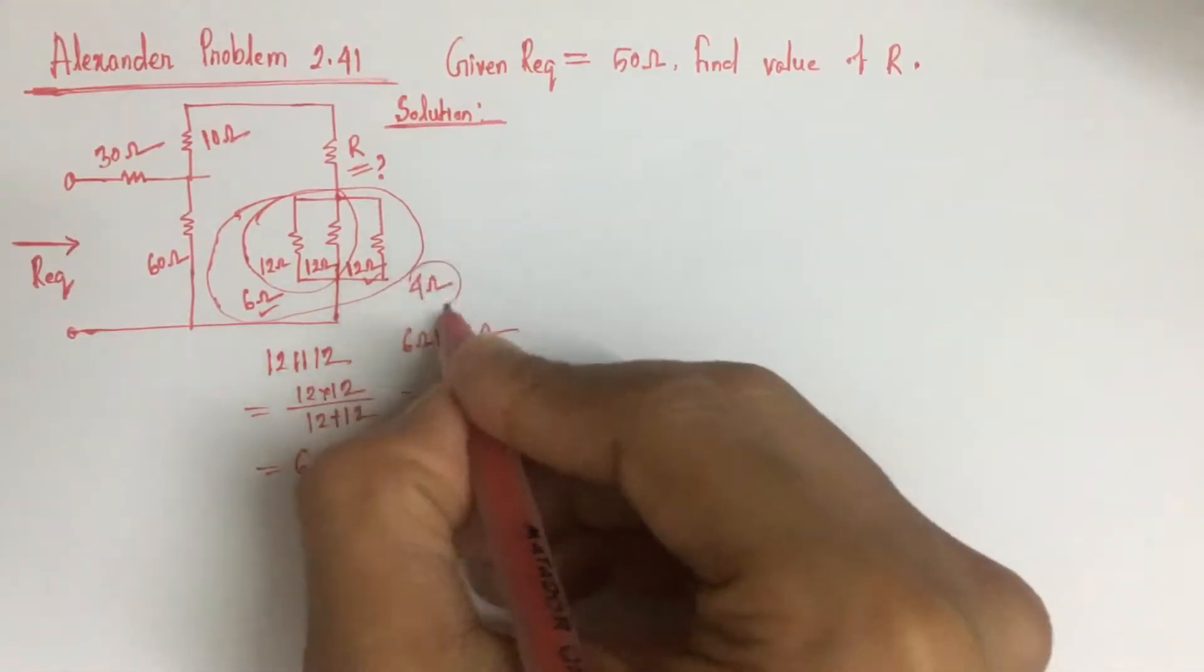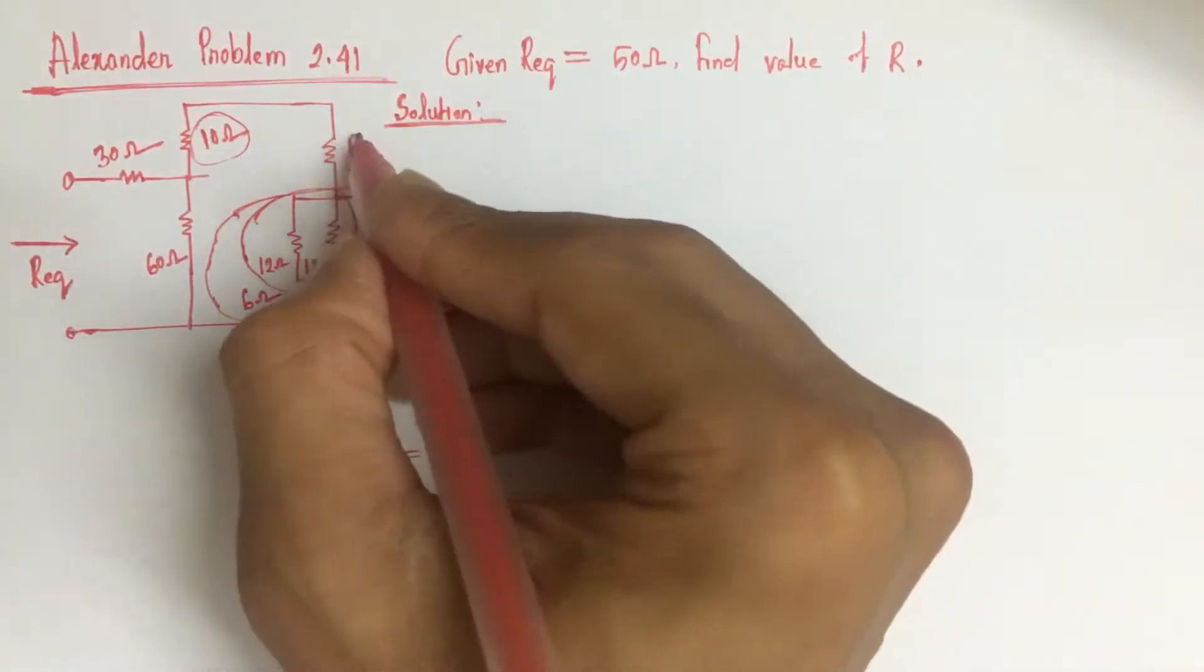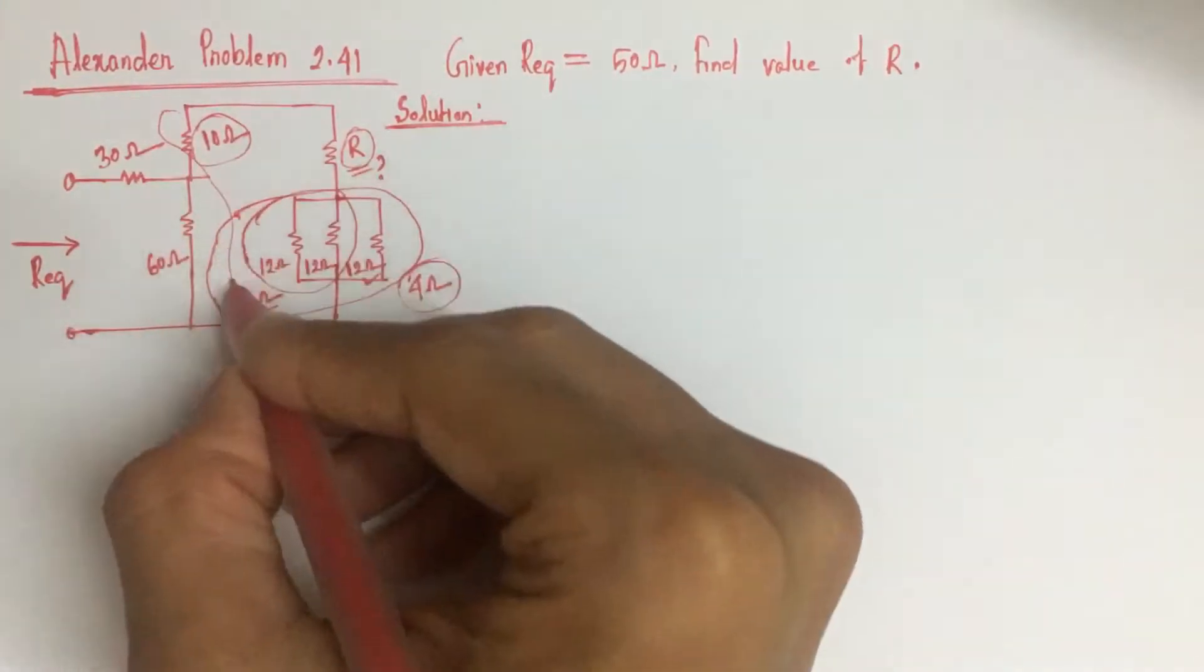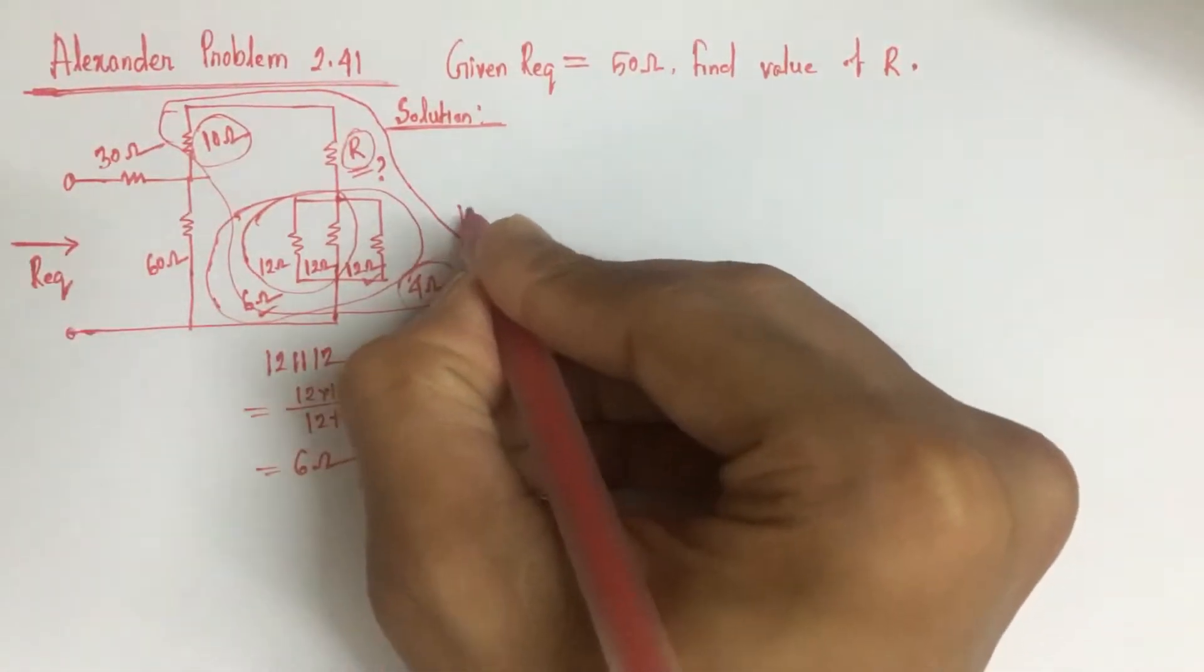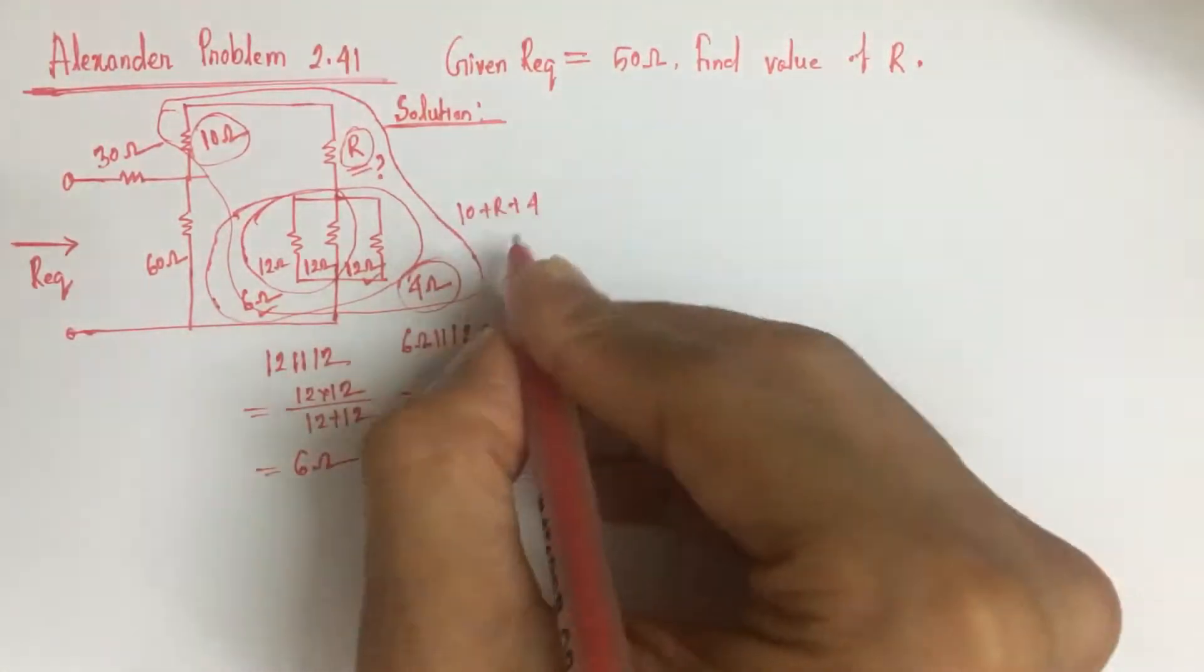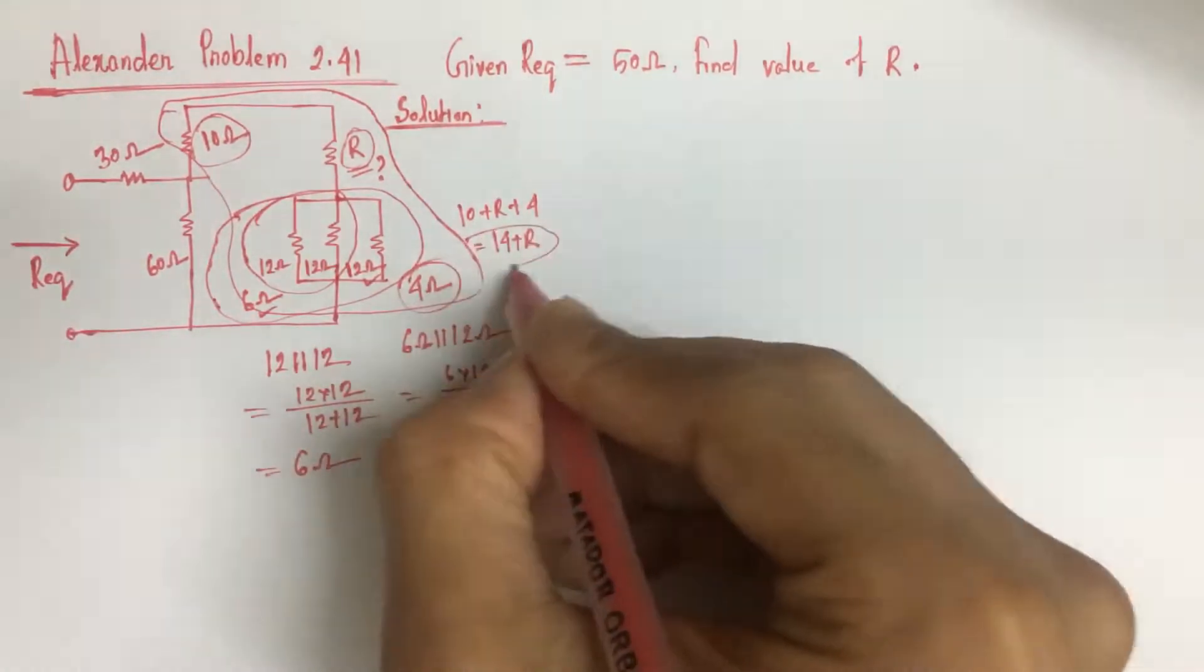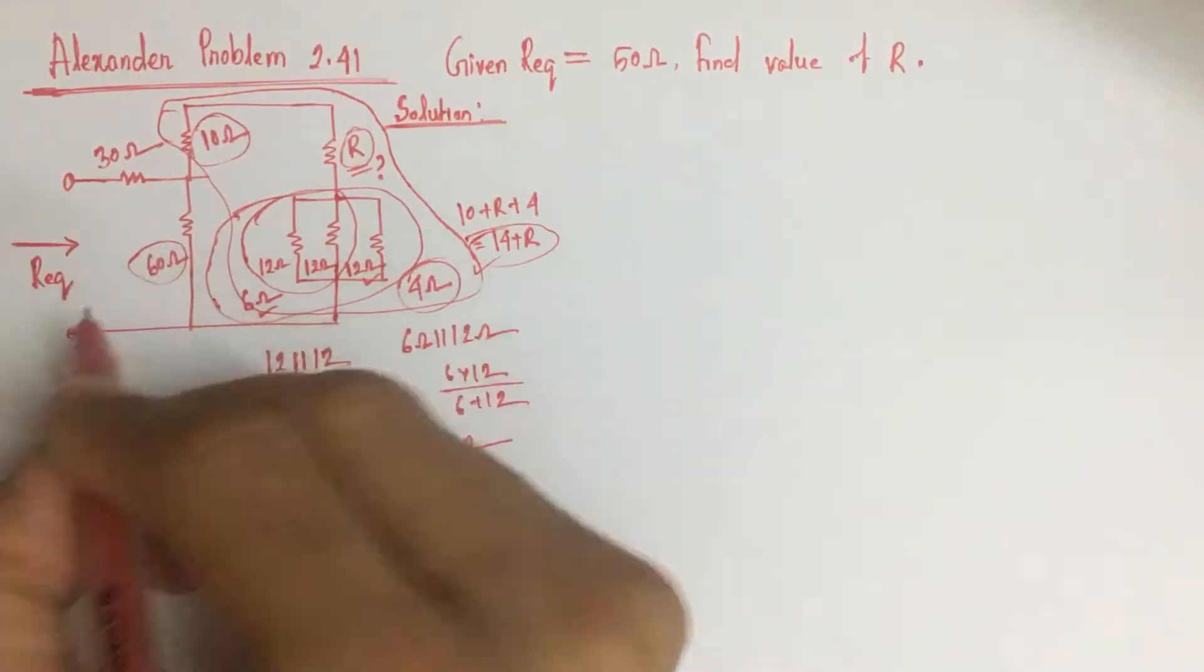Now this 4 ohm resistance is in series with this 10 ohm resistance along with the resistance R. The value of this whole resistance is 10 plus R plus 4, that is 14 plus R. Now this 14 plus R resistance is in parallel with this 60 ohm resistance.